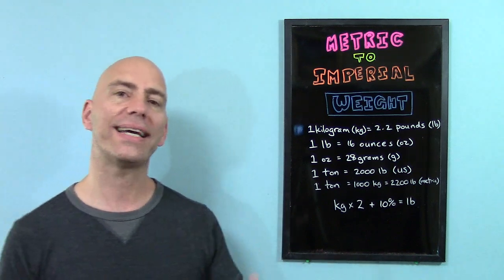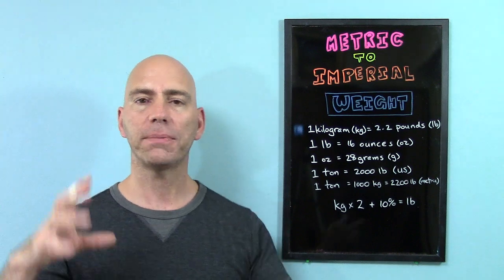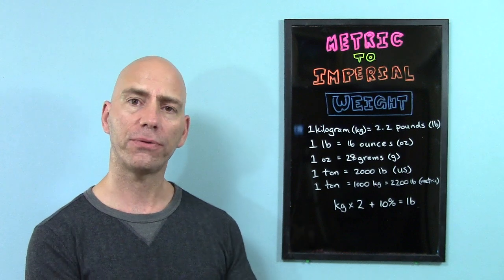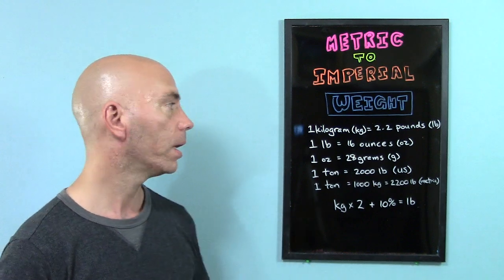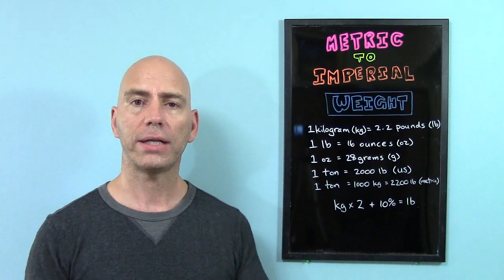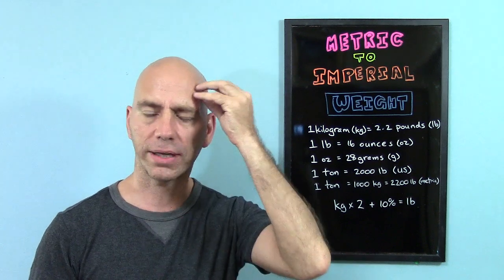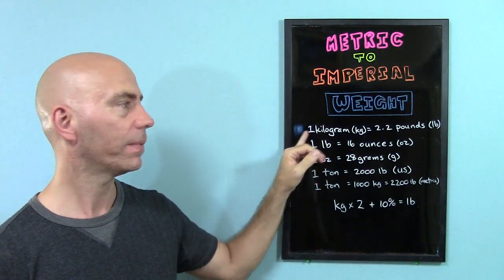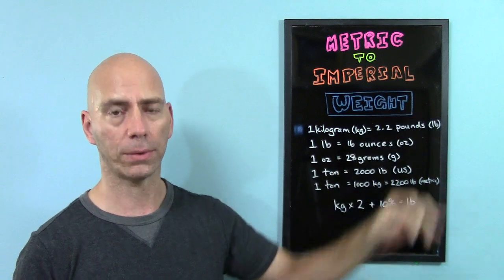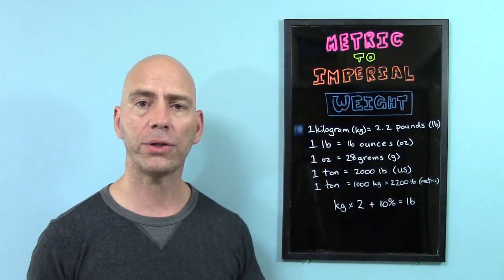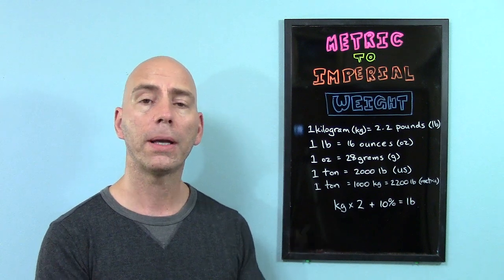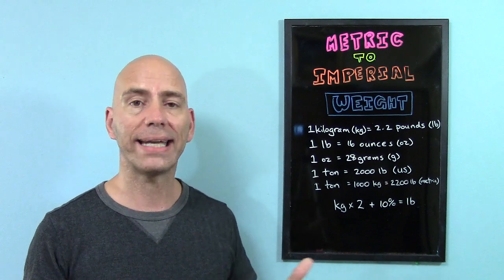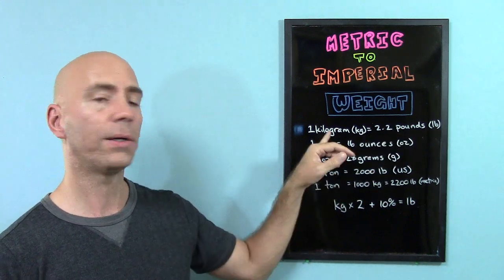So today I'm going to talk about weight and how to make quick conversions in your head just by remembering a few important numbers. The first thing that you need to remember and burn onto your brain is that one kilogram equals 2.2 pounds.